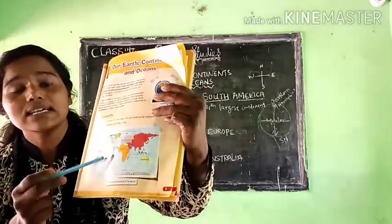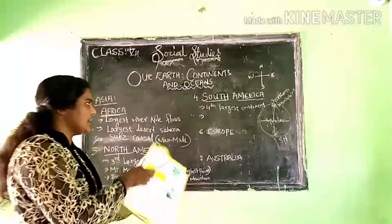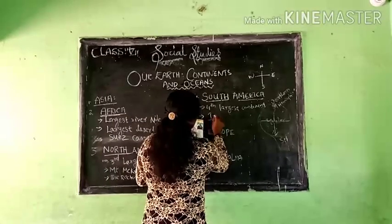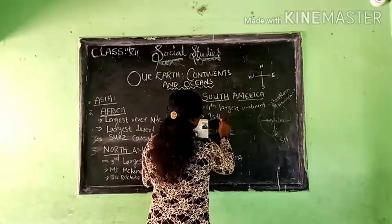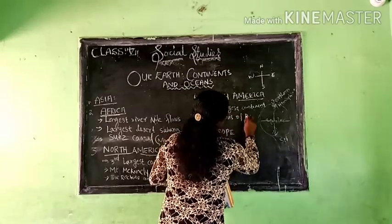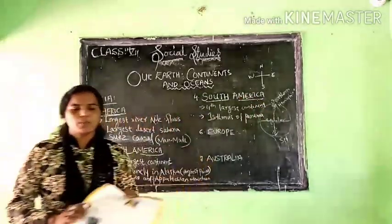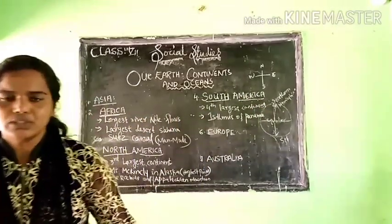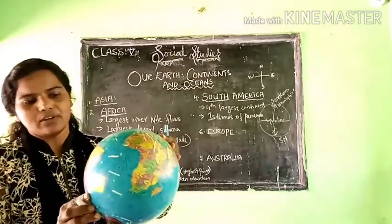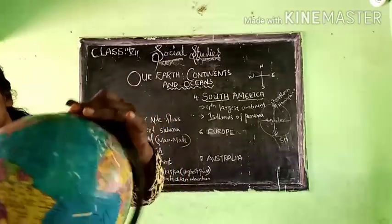This connection is known as the Isthmus of Panama. It is a very narrow land that connects the two continents. It is visible in your textbook as a very thin, narrow land, and even on the globe you can see the small part connecting these two continents.